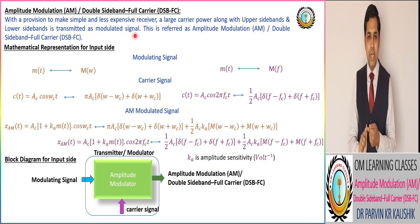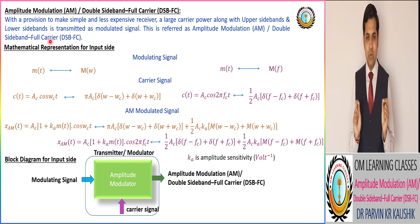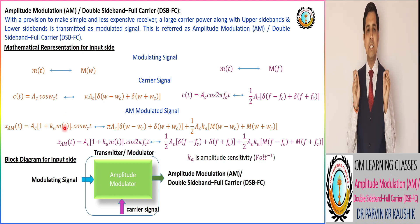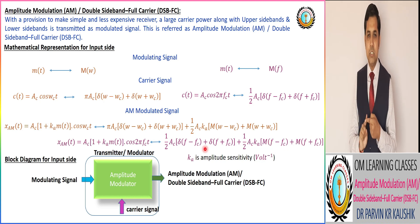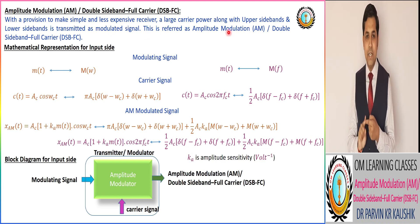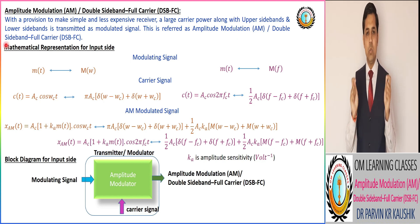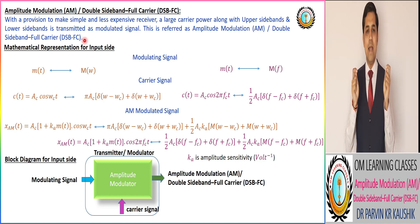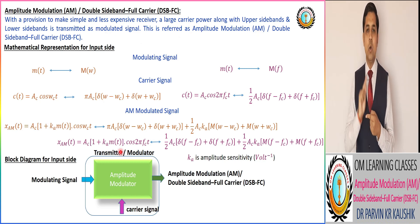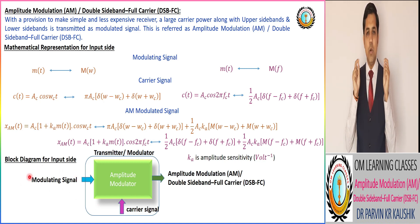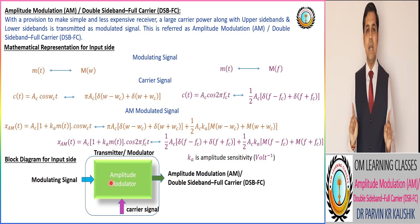The modulated signal contains the lower sideband, upper sideband, and the full carrier. The transmission of this modulated signal is achieved by the amplitude modulation scheme known as Double Sideband Full Carrier, or by default simply known as amplitude modulation. In amplitude modulation, the amplitude of the carrier wave is varied according to the instantaneous value of the modulating signal, and a full carrier is transmitted along with the sideband.